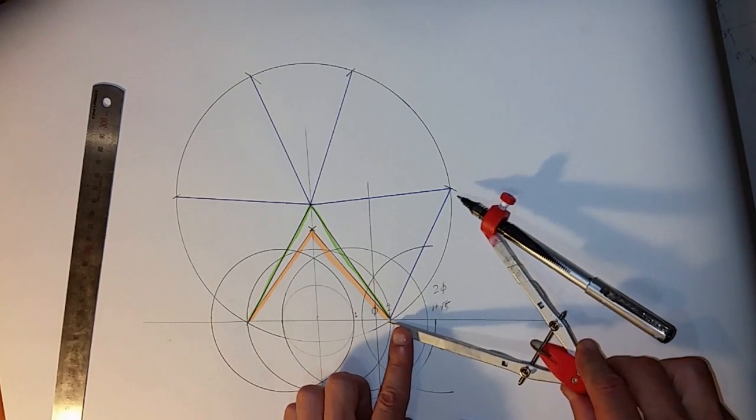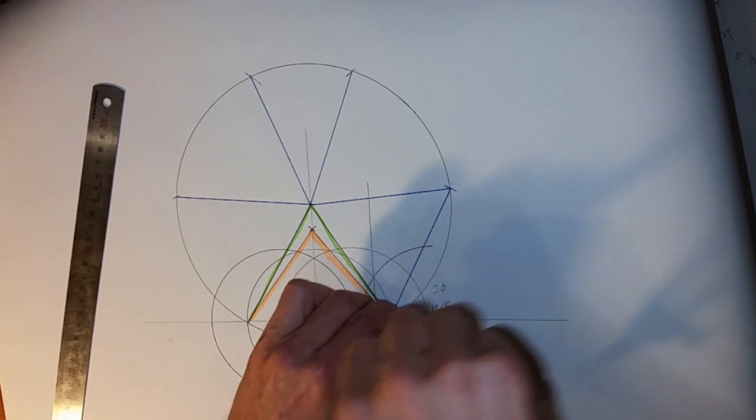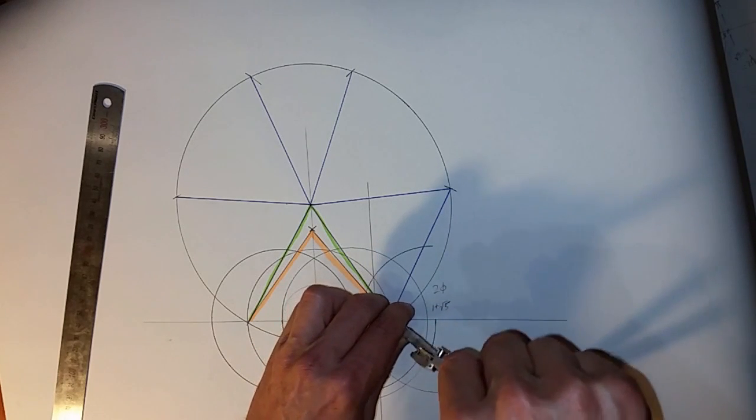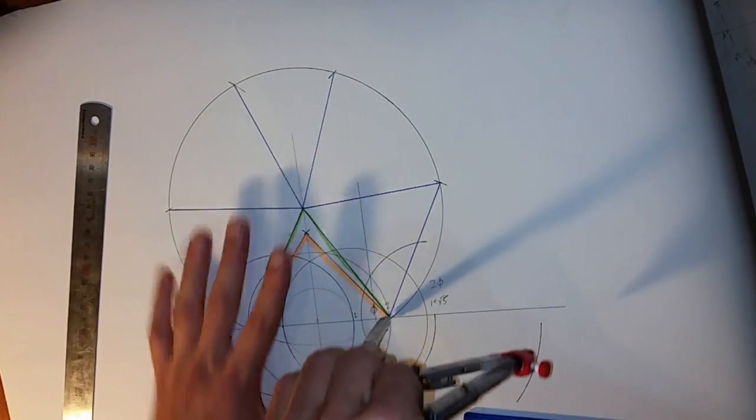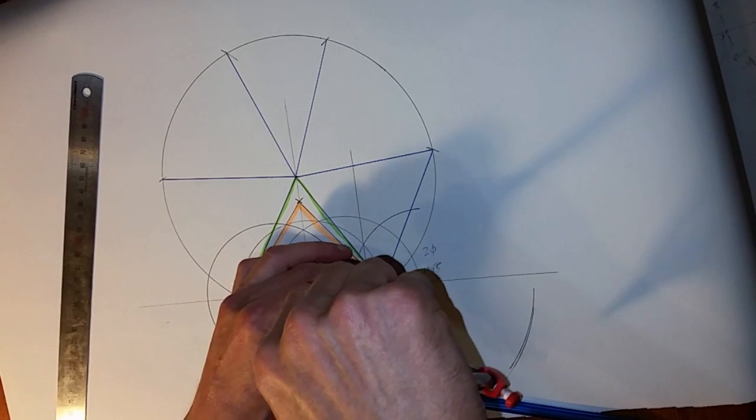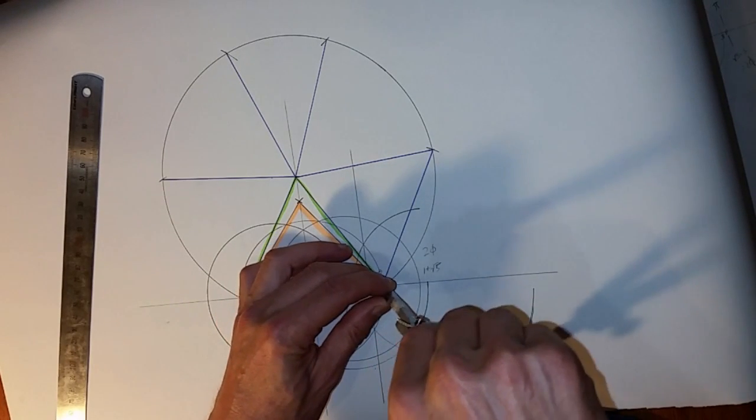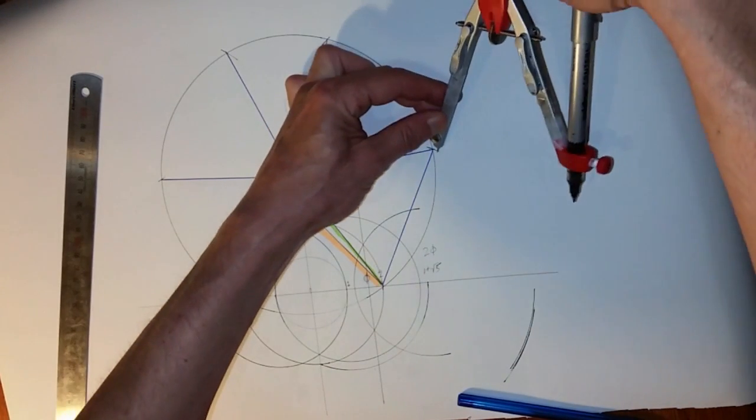We still have our compass set at that distance, and now we're going to create a square. We'll do the same here.